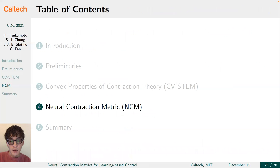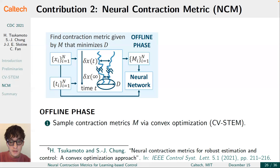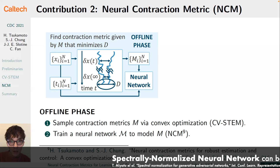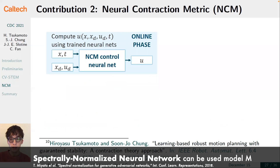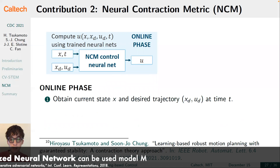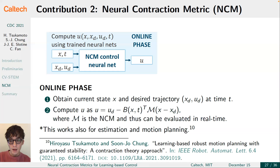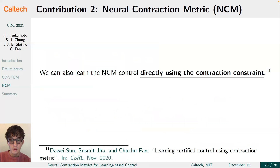This is how we came up with the idea of a neural contraction metric. Instead of solving the optimization in real-time, we sample training data for the optimal contraction metric offline using the convex optimization approach, and then model it by a neural network. In the online phase, given the current state, time, and desired trajectory, we can get a control input just by evaluating the NCM neural network, which is much computationally cheaper than solving a convex optimization. This method works also for estimation and motion planning.